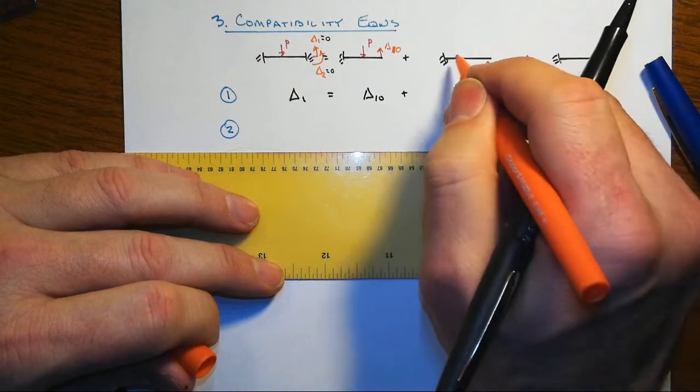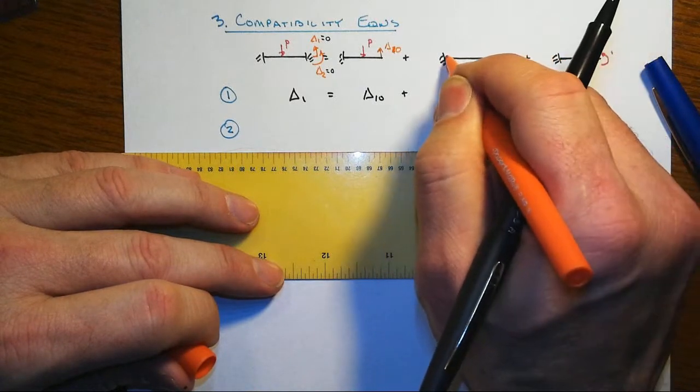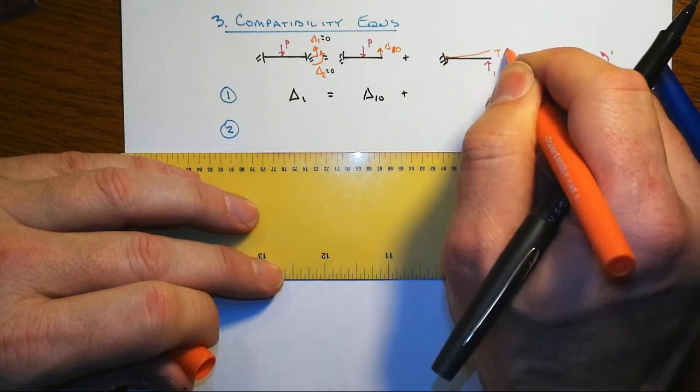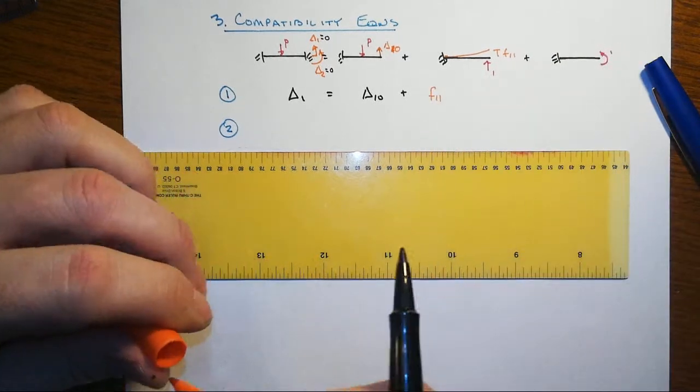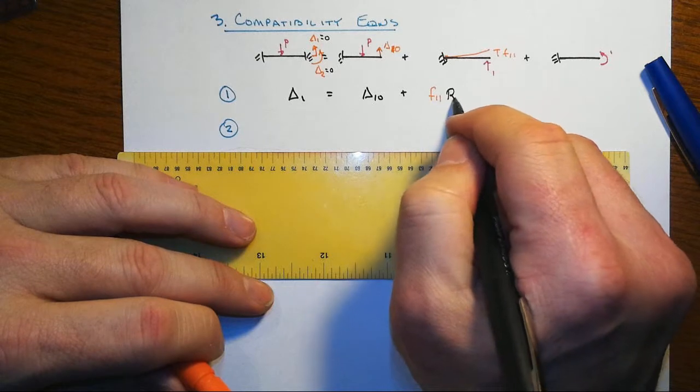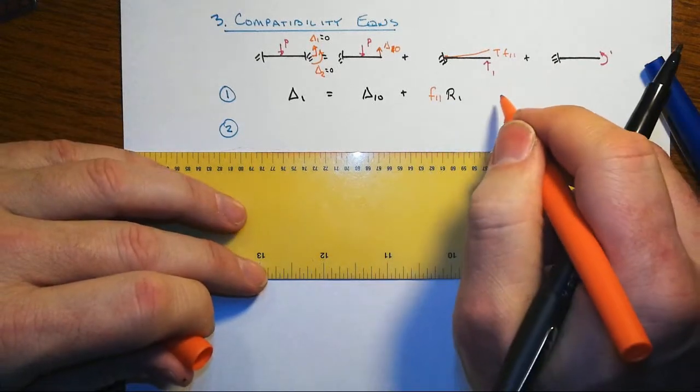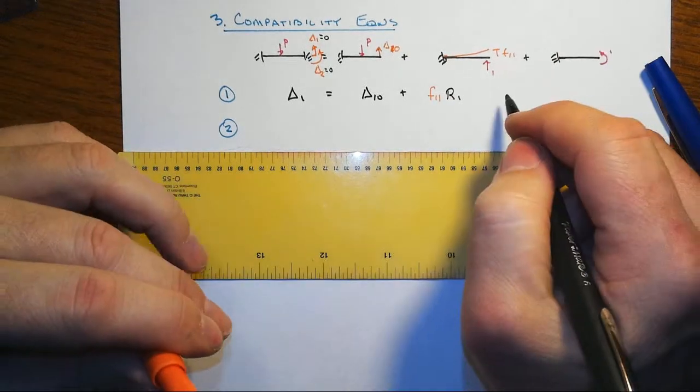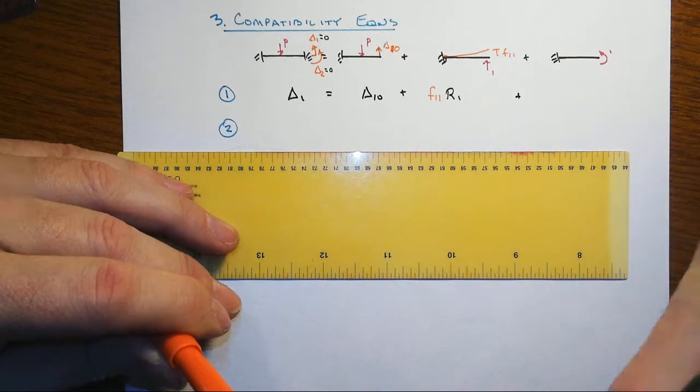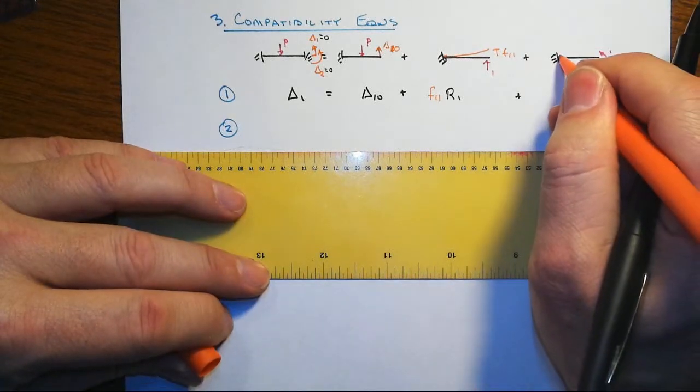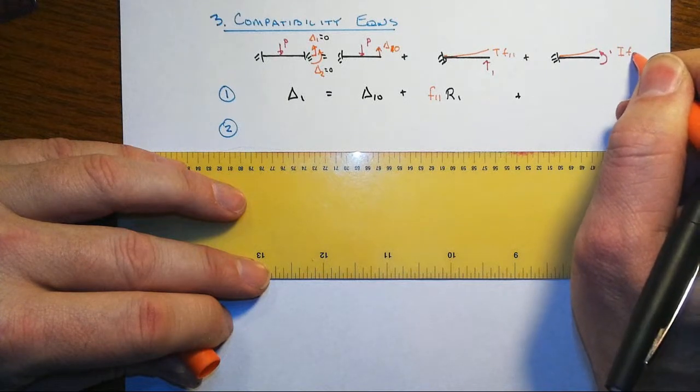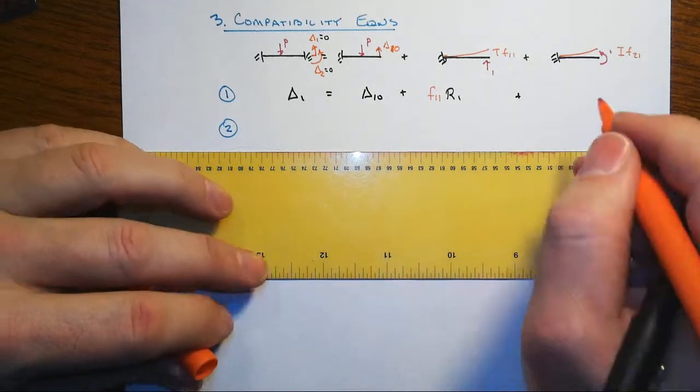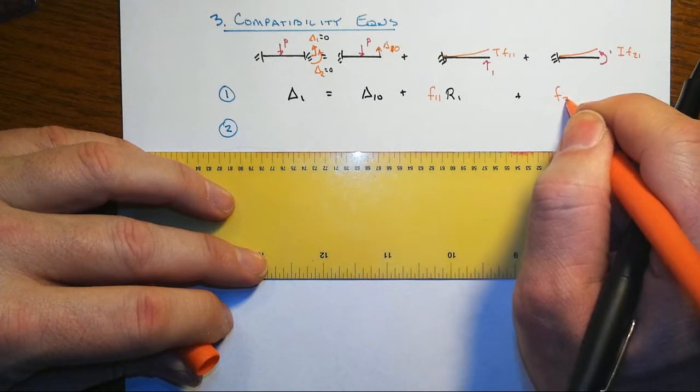Plus the displacement that happens when we put the unit load on here and we have that translation - there's your F11 - but that's going to have to get scaled up by the actual value of R1, plus then the displacement that happens at that location and then caused by the second redundant reaction.